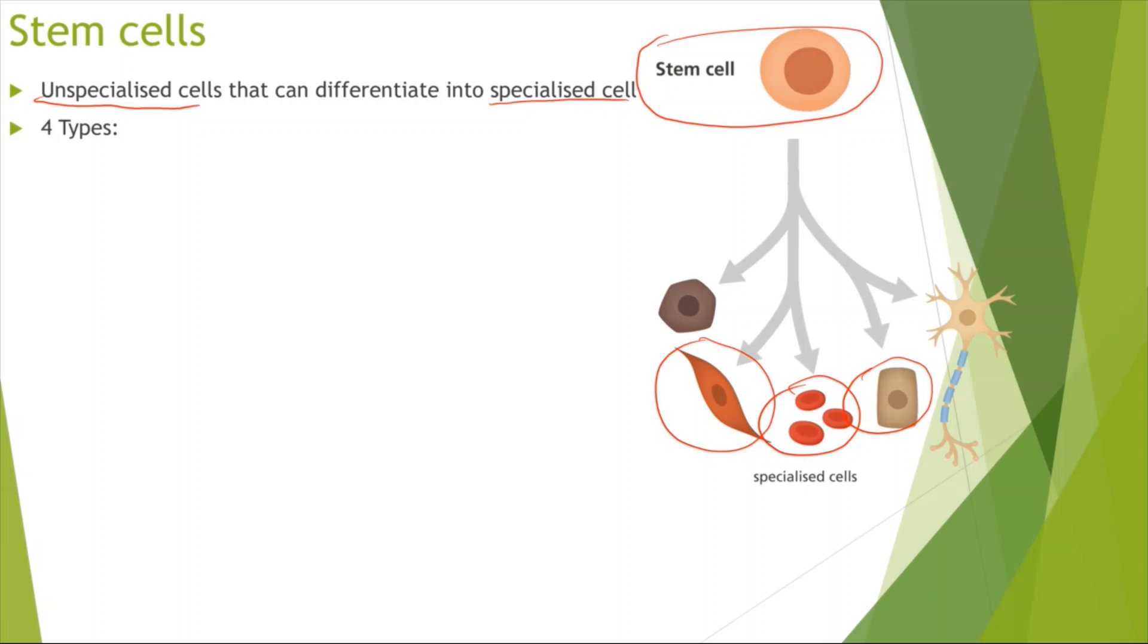Now there's four main types of stem cells that you need to be aware of. So starting with the most unspecialized cells we have the totipotent cells. Then we have the pluripotent cells, the multipotent cells and finally the unipotent cells. So as we go down this list the more specialized we become and we'll go through them in more detail now.